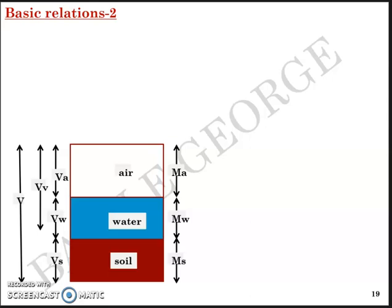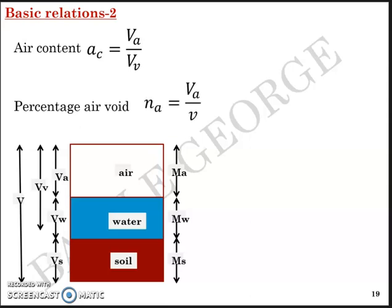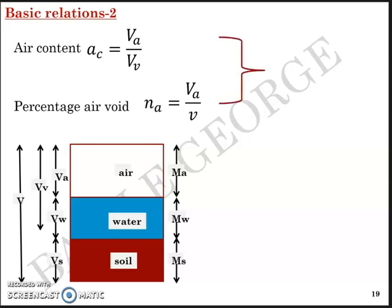Basic relation number 2: based on the three-phase system diagram, air content AC equals Va/Vv, and percentage air voids Na equals Va/V. Looking at these two terms, you can write Na equals porosity n multiplied by air content AC. This is basic relation number 2.